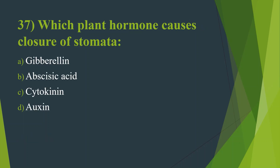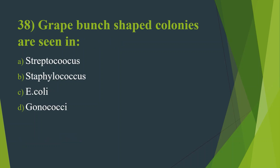Thirty-seventh question: Which plant hormone causes closure of stomata? Option A, Gibberellin. Option B, Abscisic Acid. Option C, Cytokinin. Option D, Auxin. Answer is Option B, Abscisic Acid.